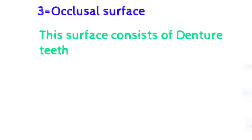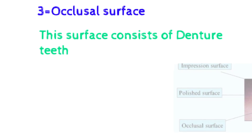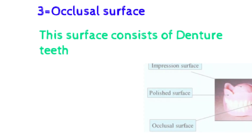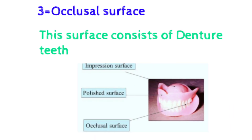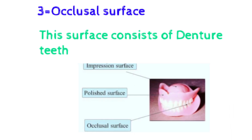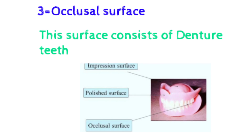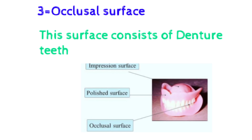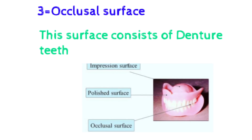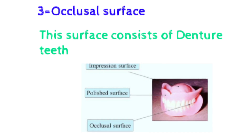The third surface is the occlusal surface, which consists of the denture teeth. Because these teeth come into occlusion, it is known as the occlusal surface. To recap from the diagram: first is the impression surface toward the basal tissue, second is the polished surface which includes the buccal and lingual surfaces, and third is the occlusal surface which has the teeth.